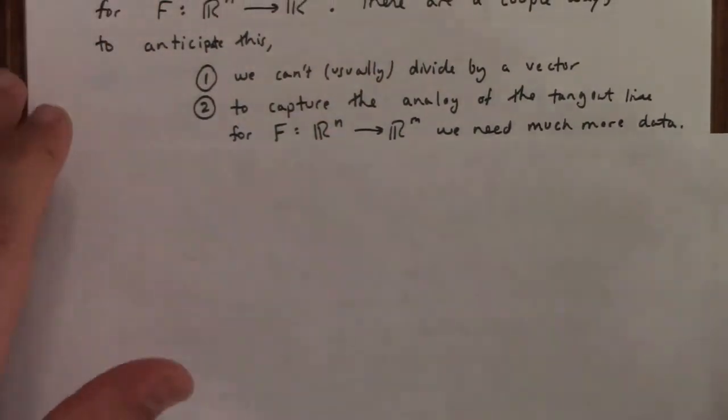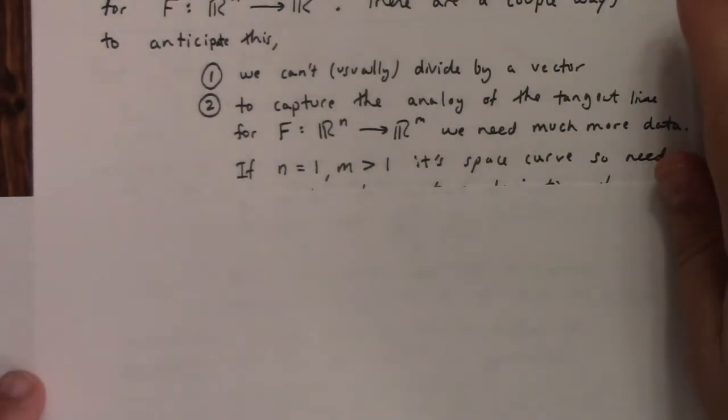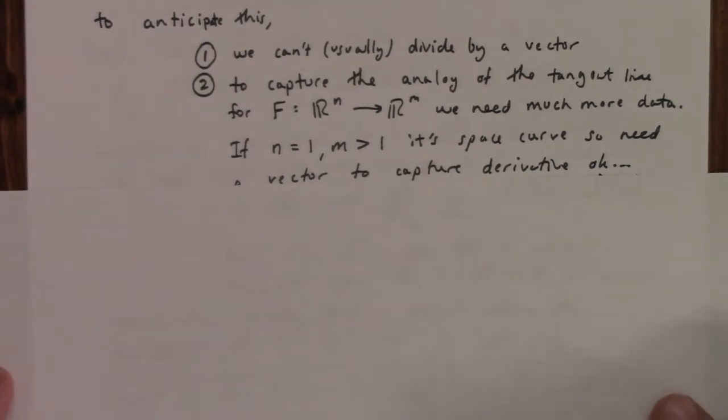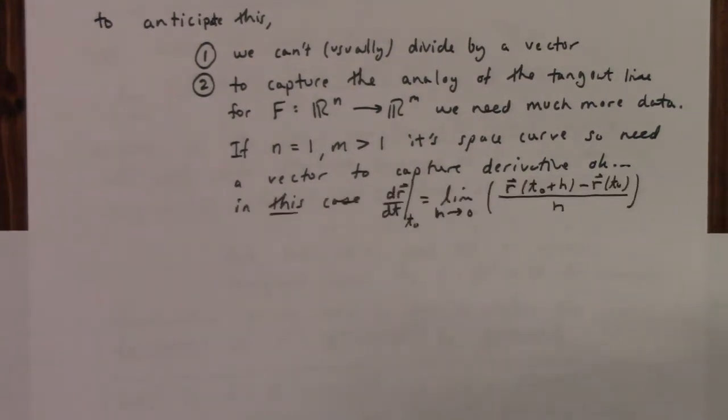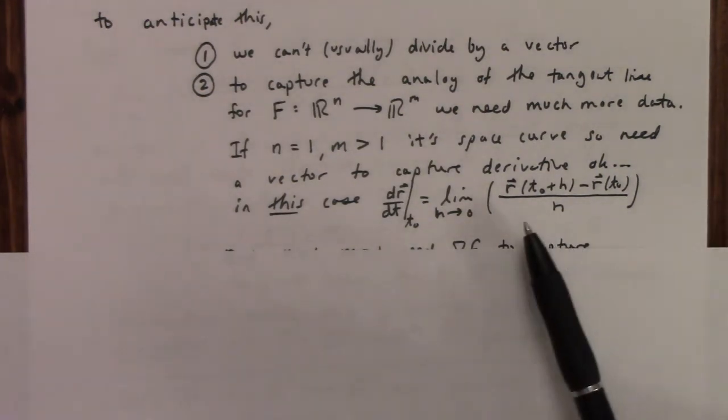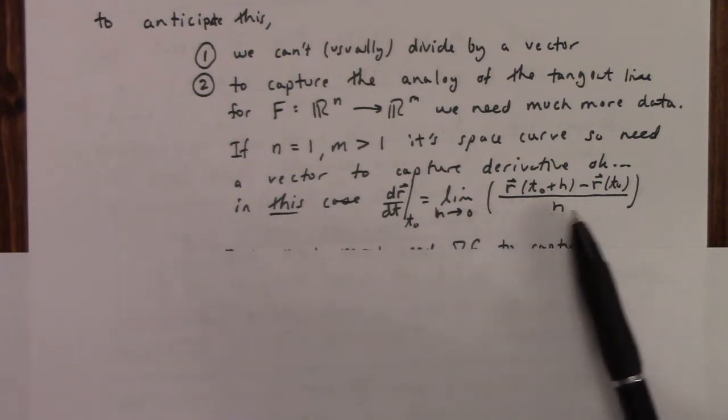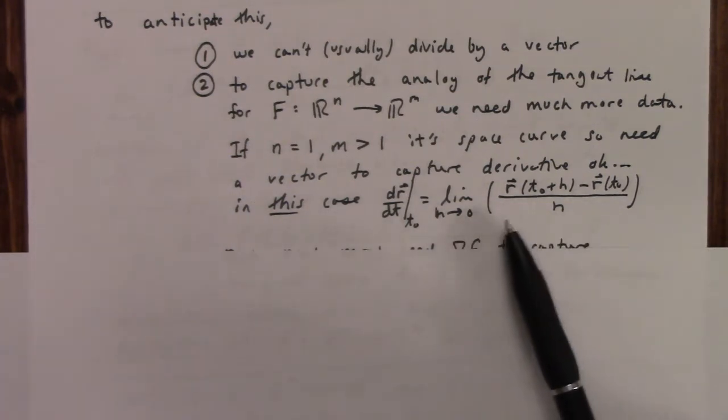I mean, fine. If your domain is one-dimensional and your range is higher dimensional, that's okay. That's a space curve. That's a parametrized curve. We talked about that in your Calculus III course, and there the derivative is captured by the velocity, and, okay, they're fine. We can still do the limiting. Essentially, the generalization works there. We can still define derivative in terms of the difference quotient for that case.